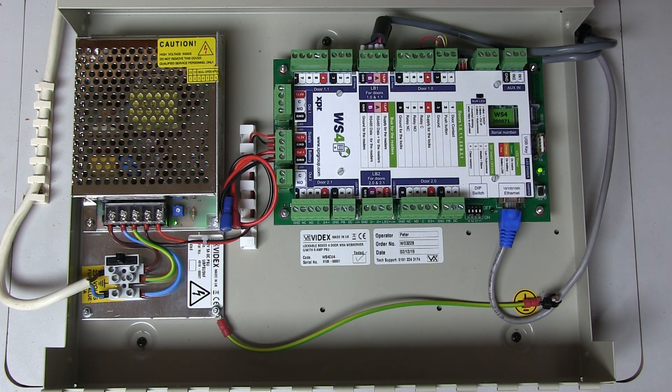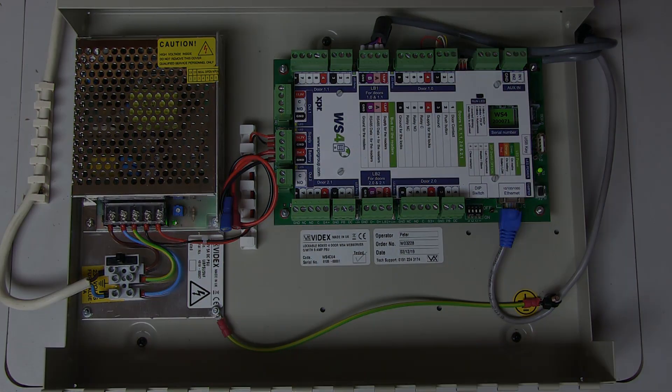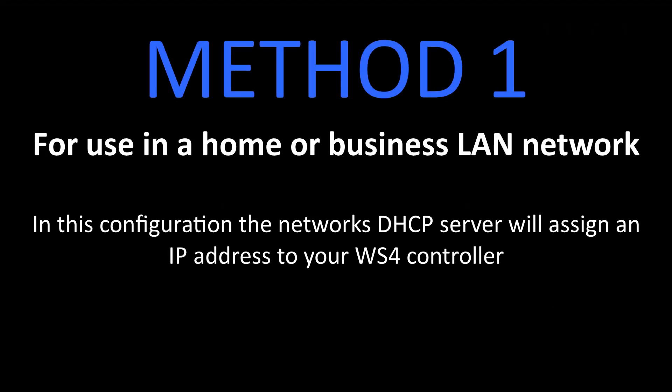For the first connection and configuration of the system, we need to connect the WS4 to a PC. There are two methods to do this. Method 1 is for use in a home or business local area network. In this configuration, the network's DHCP server will assign an IP address to your WS4 controller.